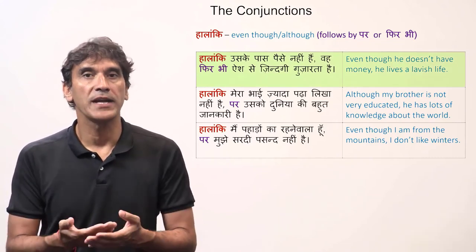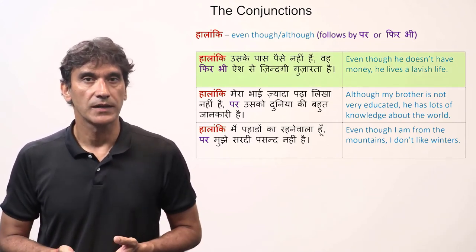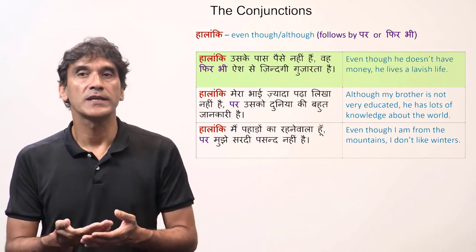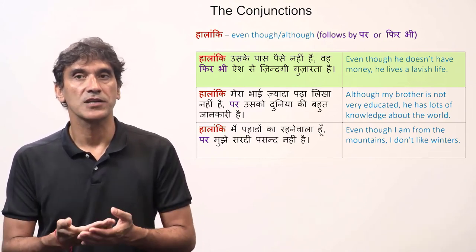Example: halanki us ke paas paise nahi hai, woh phir bhi aish se zindagi guzarta hai — even though he does not have money, he lives a lavish life.